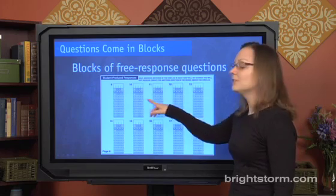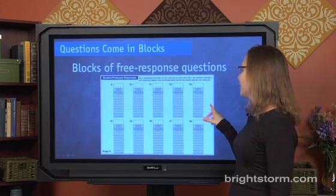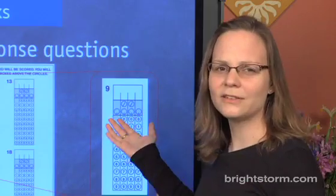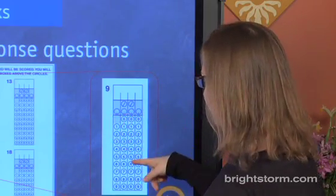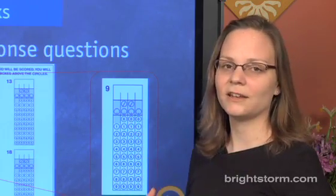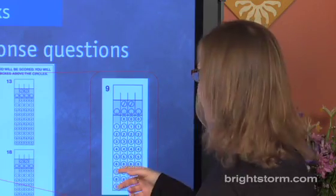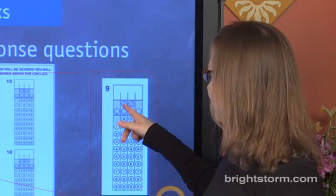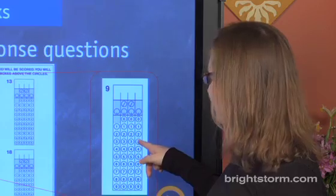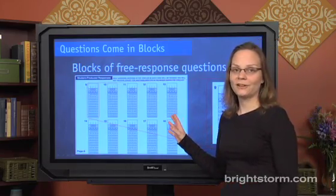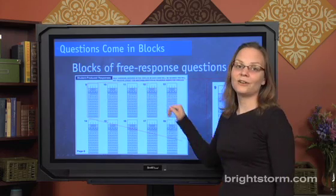For each of these ten questions, you're going to have to look at each one and grid in your answer. So for instance, if the answer is 5.2, you would bubble in 5.2. If the answer is 1/13, you'd bubble 1 divided by 13. So these are the two kinds of blocks you'll encounter, and within each one, it'll go from easy to hard.